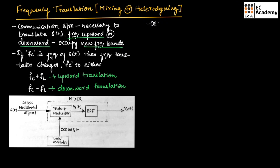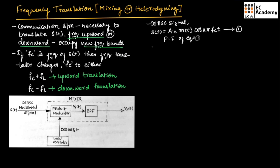If we consider the DSBSC signal, we can write it as S(T) = Ac · M(T) · cos(2π·Fc·T). Let us take this as equation number 1. If we take the Fourier transform of equation 1, we will get S(F) = (Ac/2) · [M(F − Fc) + M(F + Fc)]. Let us call this equation number 2.